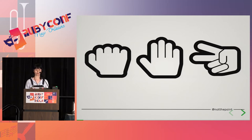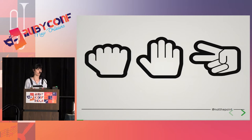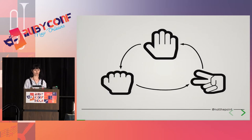Rock, paper, scissors is a simple game played between two people. But just as a formality, let's briefly explain the rules. Each player simultaneously chooses one of three moves: rock, paper, and scissors. If both players choose the same move, it's a draw. Otherwise, we have rock beats scissors, scissors beats paper, and paper beats rock.